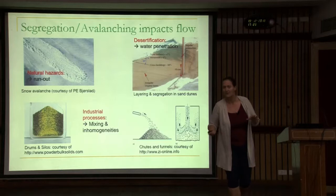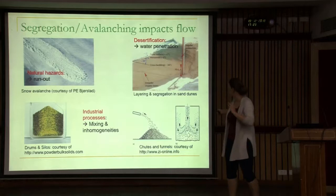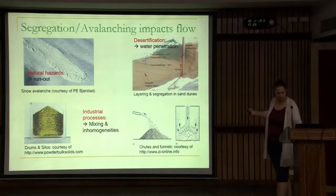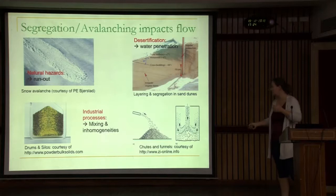To put things in perspective, I want to talk a little about segregation and avalanching. It's very important in flows like avalanches — I've already shown you a snow avalanche and a cross-section of a dune. Due to variations in size, layers form in dunes. Those layers have an effect on the flowability of these particles, and this is also very important in industrial processes.